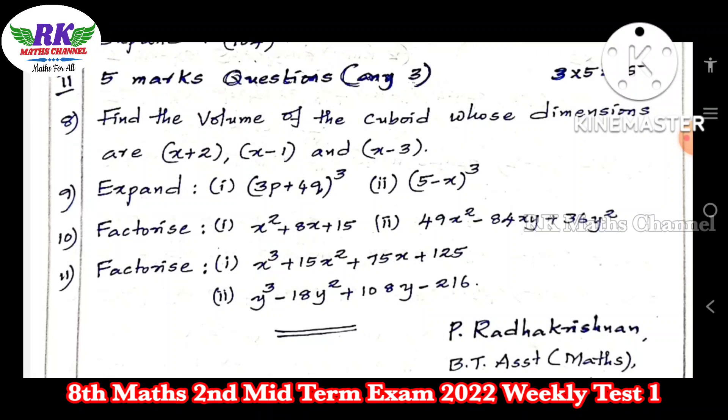Question number 8: Find the volume of the cuboid whose dimensions are given. If you have two marks, you have a cuboid. Cuboid dimensions are length, breadth, height.